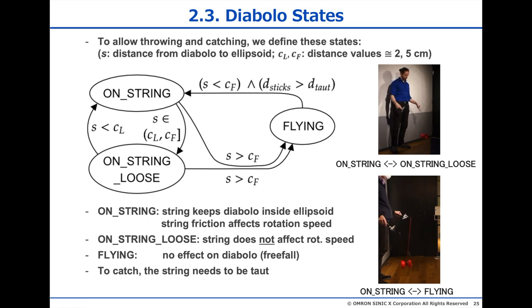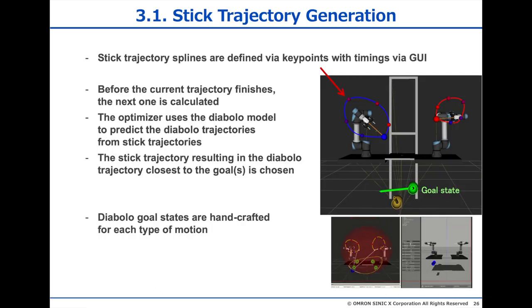Now, how do we use this model to play Diabolo with the robot? We define trajectories for the stick tips using key points and splines, as shown on the right. Then, we calculate the Diabolo trajectory that would come out of the stick trajectory, the resulting Diabolo trajectory, and check how close the Diabolo came to the goal, which you can see in green on the right, and which is manually chosen for each type of motion. Each of these trajectories takes about 2 seconds to execute, and while it is running, we calculate and optimize the next one, so the cycle never stops.